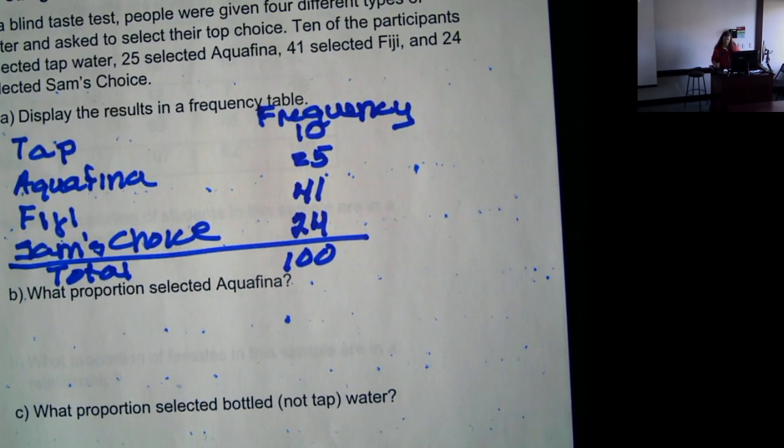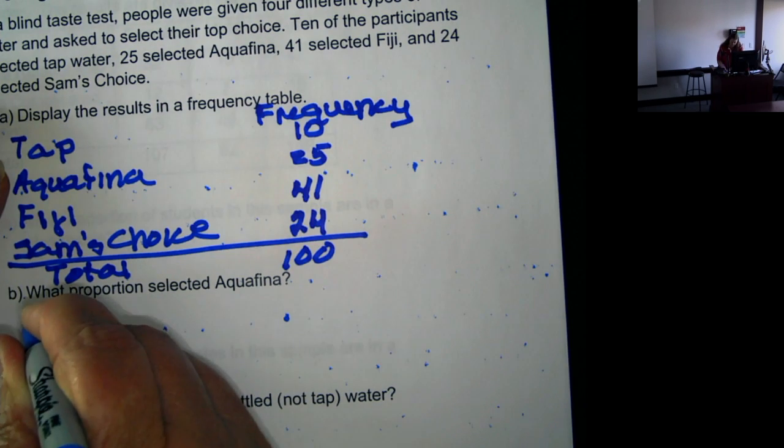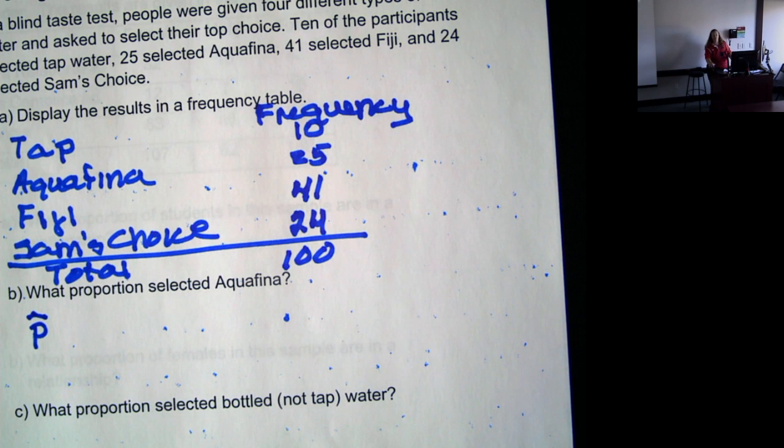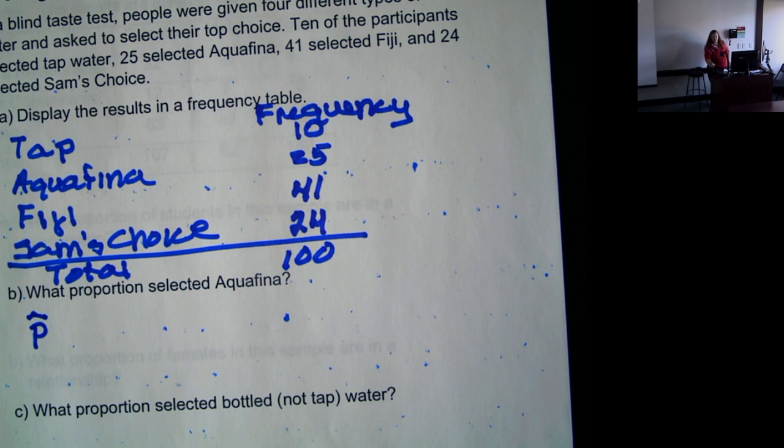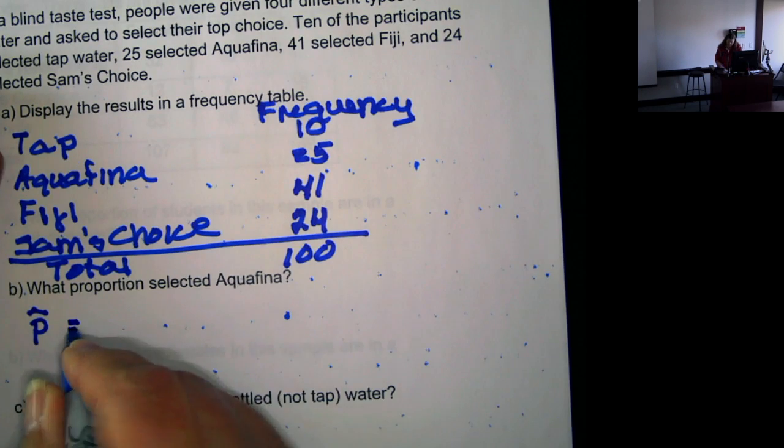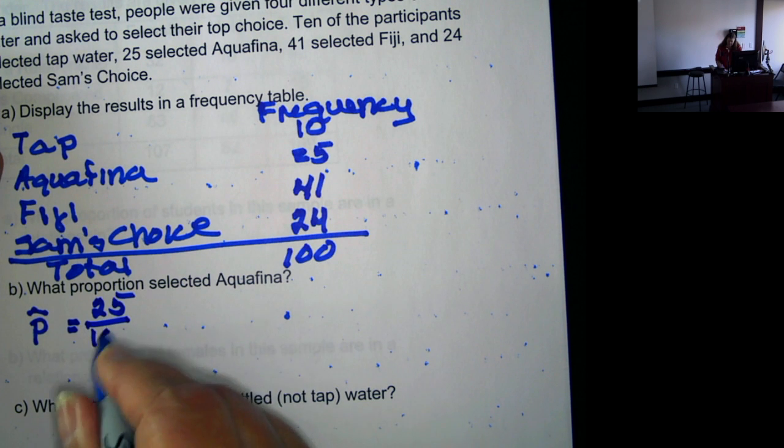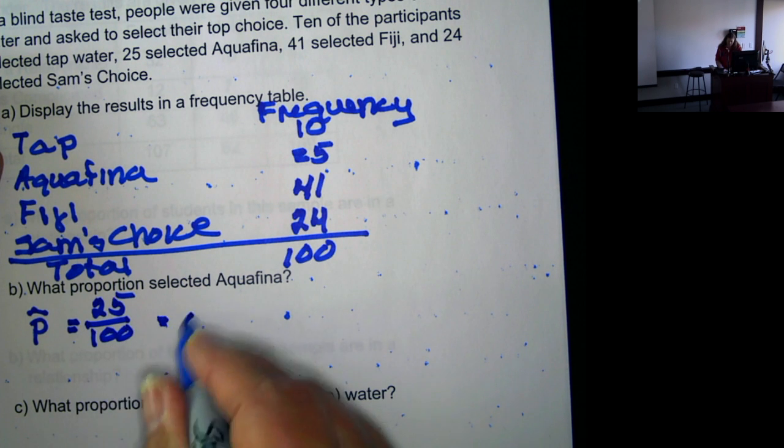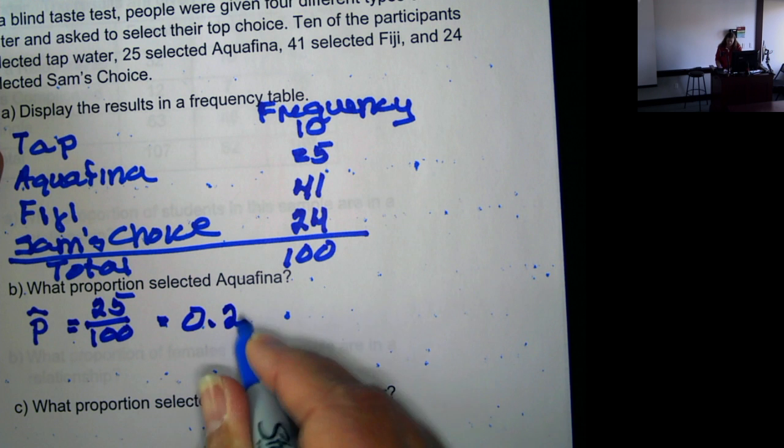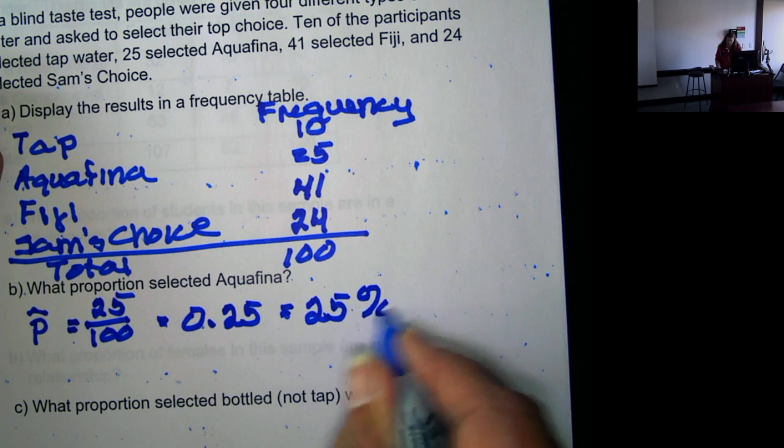Now we want to find what proportion selected Aquafina. Well, because this is a sample with which we're working, the symbol we use for proportion is p hat. We would use just p if it were the entire population, but this is only a sample of 100. And Aquafina, there were 25 who preferred Aquafina, so 25 over 100, or 0.25, or you could also write it as 25%.